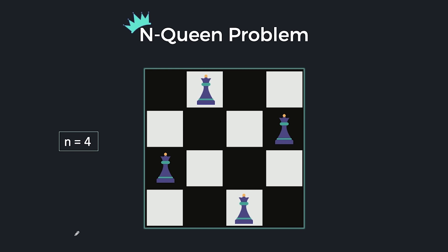Hi everyone, welcome to your college. Now we are going to see the famous N-Queen problem. So what happens in the N-Queen problem? We are given a chess board of N by N size and we have to place N queens on that chess board such that no two queens attack each other.